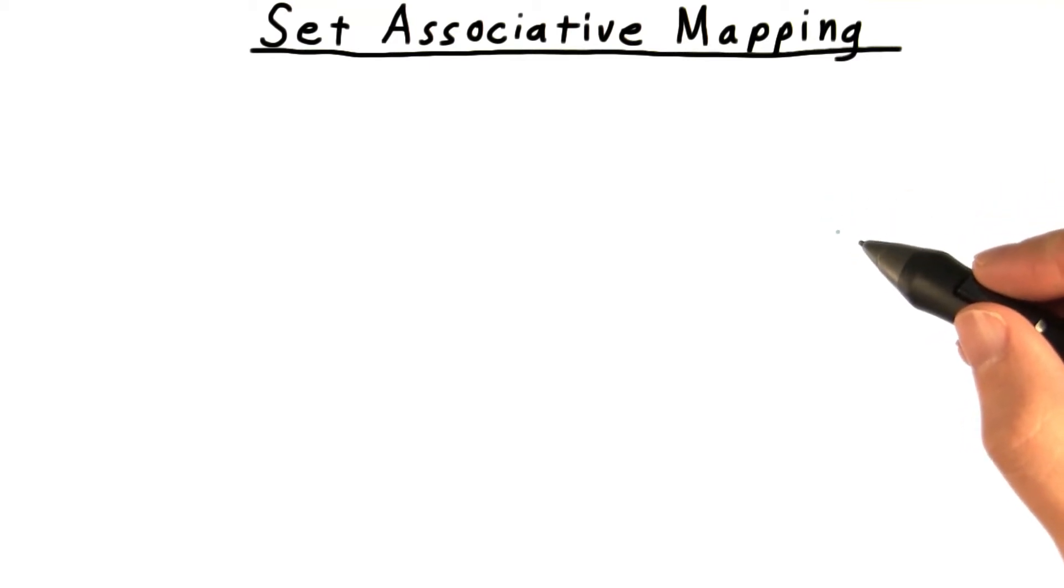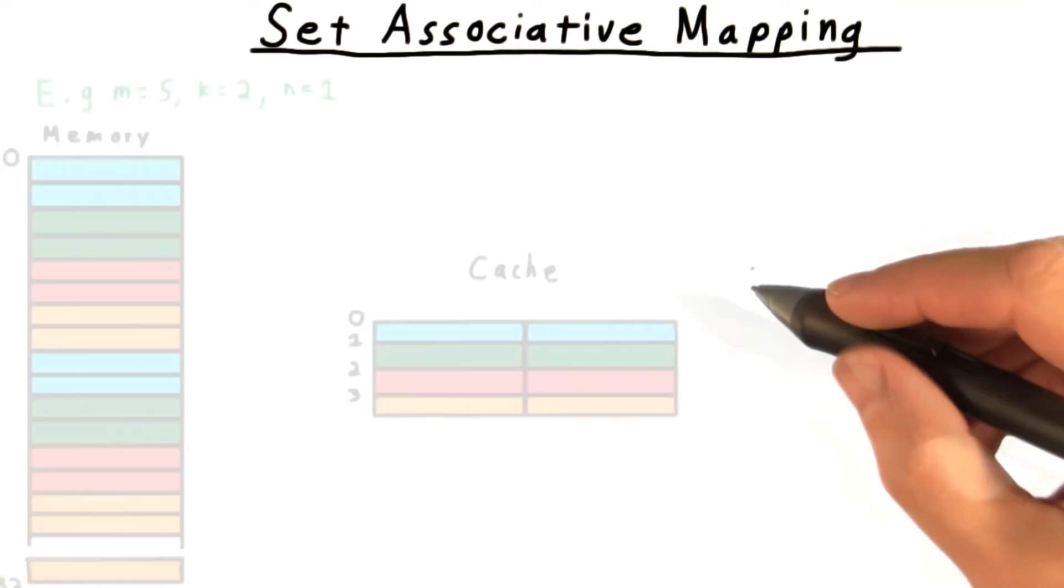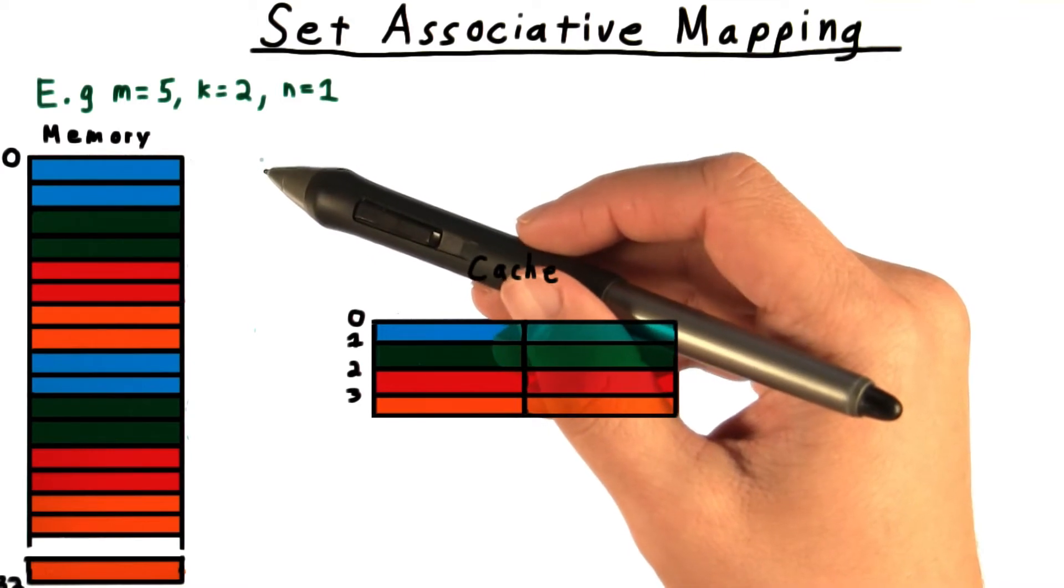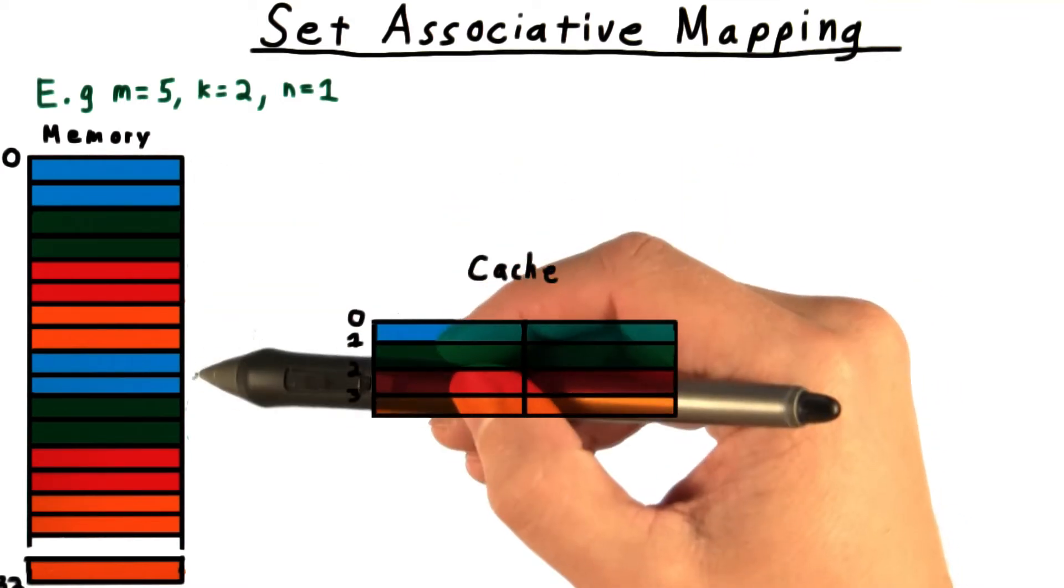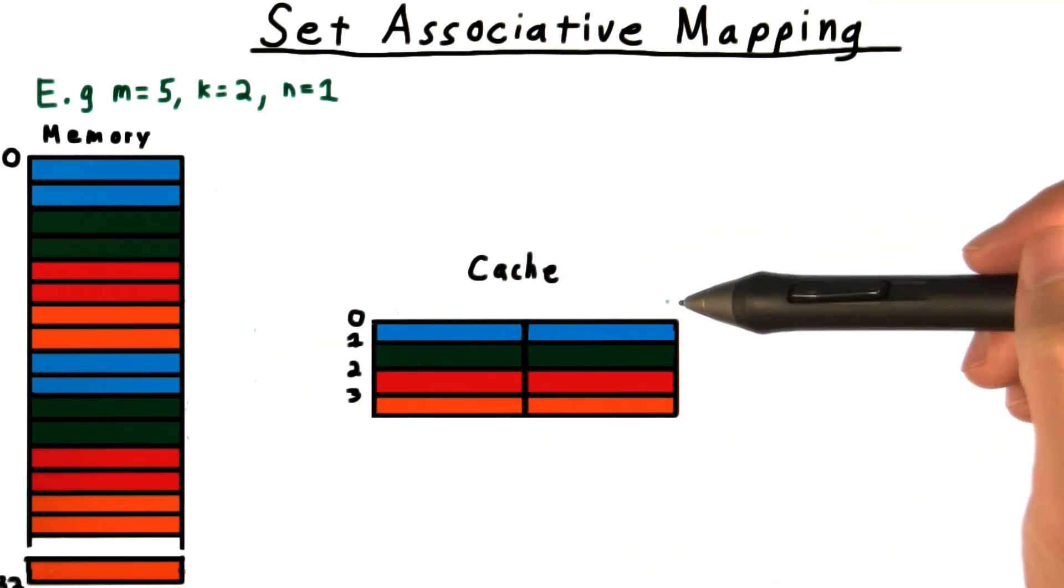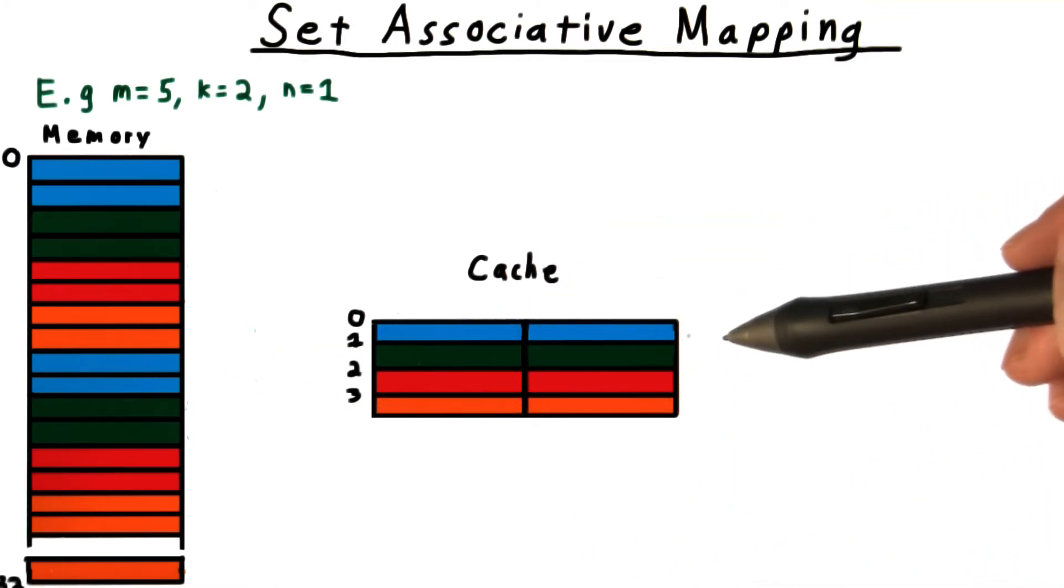It's possible to get unlucky using direct map caches in that different blocks that are important to your application might get mapped to the same index in the cache. For instance, if an application happens to access two cache lines that have the same index, maybe this one and this one here, then they will constantly be evicting each other from the cache, and it will be essentially useless.